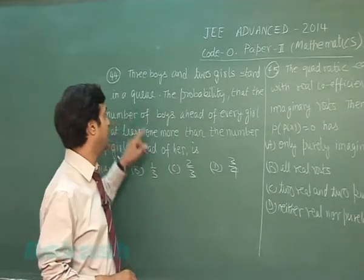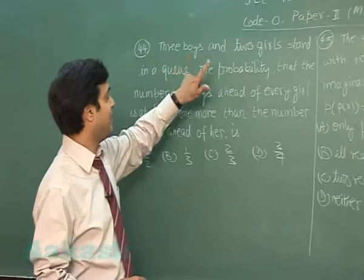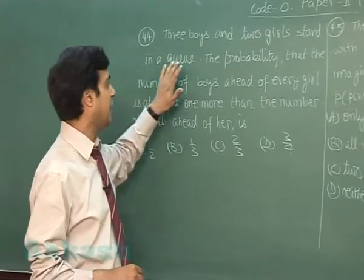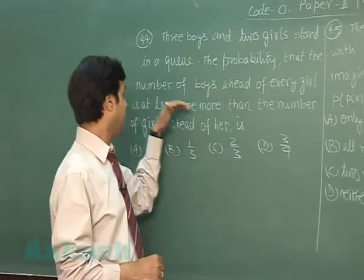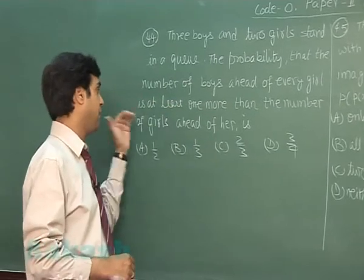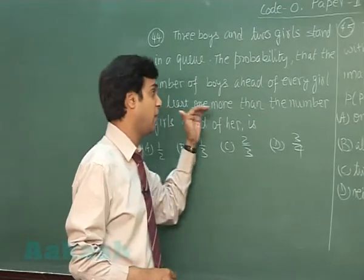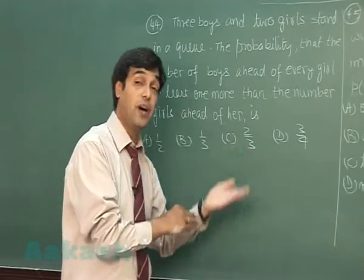Okay, let's go for question number 44. Three boys and two girls stand in a queue. The probability that the number of boys ahead of every girl is at least one more than the number of girls ahead of her is...